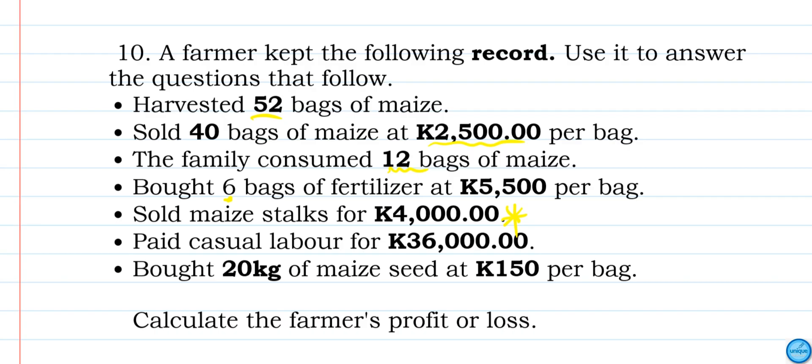That was what he gained. And he paid the casual labor K36,000. He also bought seeds. Now, we should calculate the farmer's profit or loss.